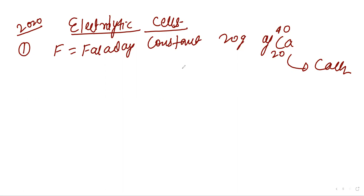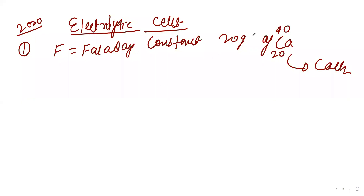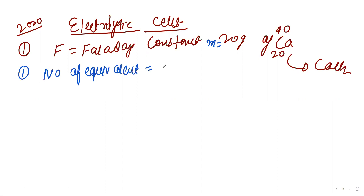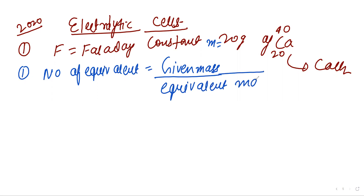We have to calculate the Faraday constant needed. Mass of calcium given is 20 grams. Number of equivalents equals given mass divided by equivalent mass. Mass is 20 and equivalent mass is 20, because calcium loses 2 electrons to form Ca²⁺, so equivalent mass = 40/2 = 20. Therefore, number of equivalents equals 20/20 = 1. So 1 Faraday of charge is required.